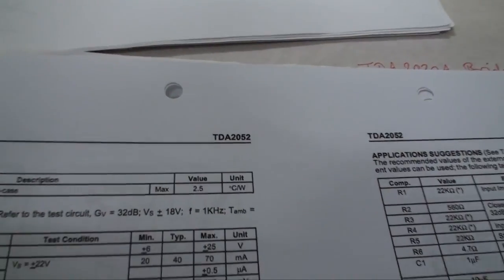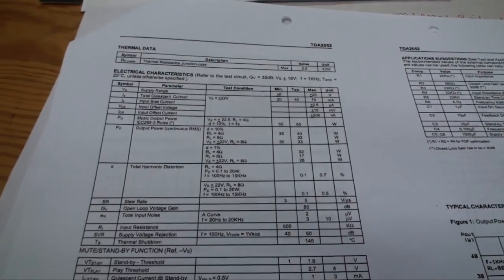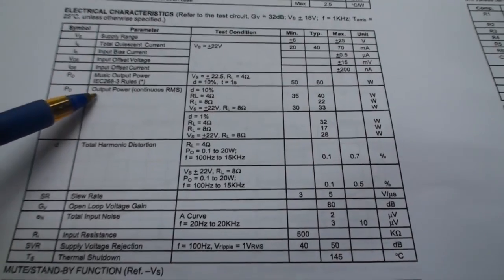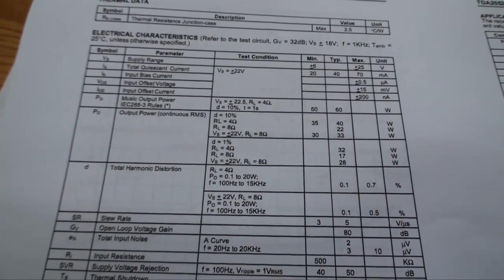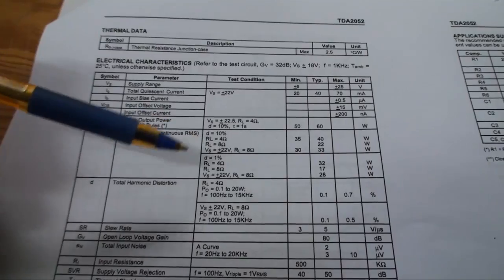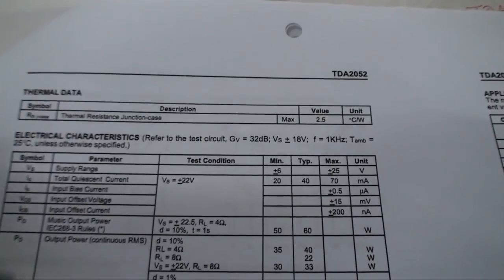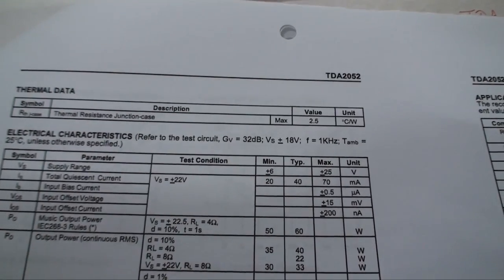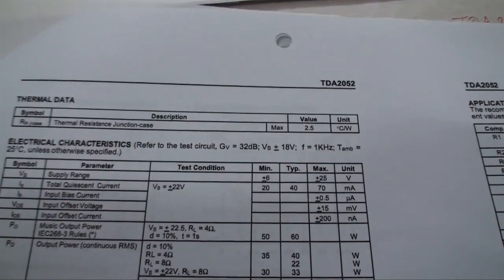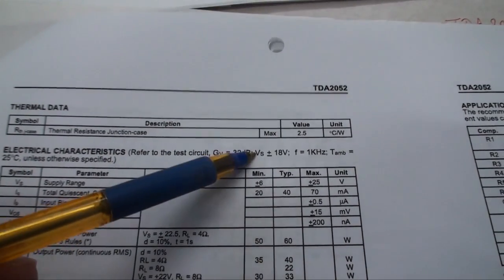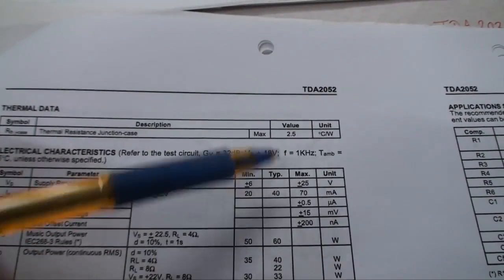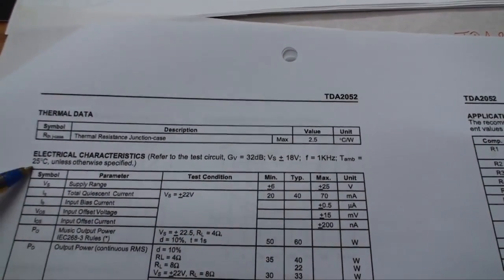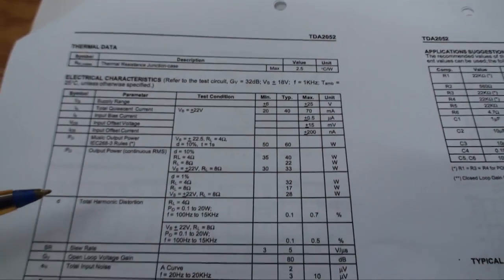Here, we have the data sheet for the TDA2052, and here we have output power. Of course, continuous RMS. Should be all able to read that. If not, switch to high definition. Here, we just go ahead and take a look. They measured this all using the test circuit, that is pretty much identical with the one that we've built. The GV, I don't think that matters for what we've been doing. Supply voltage plus minus 18 volts. We've been having 18 and a half volts. So, that's close enough. Frequency, 1 kilohertz. Ambient temperature, 25 degrees. Of course, we're all meeting those requirements.